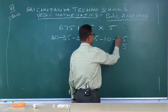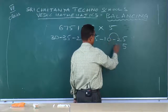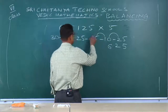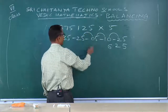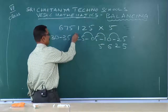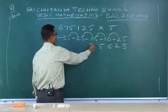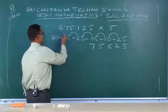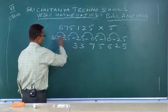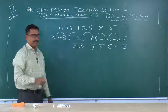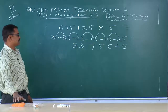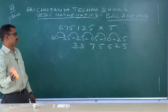5 comes out. 2, 6, 5, 7, 3. 3 comes out. 3, 3, 7, 5, 6, 6, 2, 5.